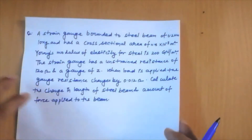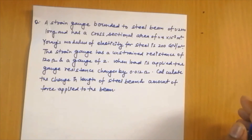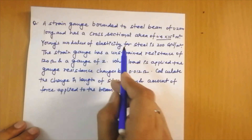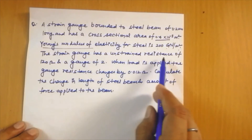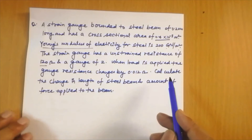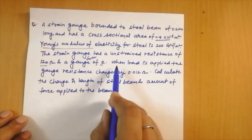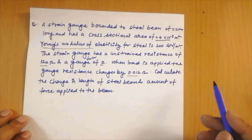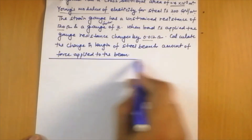Let us solve a numerical problem. A strain gauge is bonded to a steel beam of length 0.2 m and cross-sectional area 0.4 times 10 to the power minus 3 m squared. The Young's modulus of elasticity of steel is 200 gigaNewton per meter squared. The unstrained resistance of the gauge is 120 ohm and the gauge factor is 2. When a load is applied, the change in resistance delta R is 0.012 ohm. We need to calculate the change in length of the steel beam and the force applied.